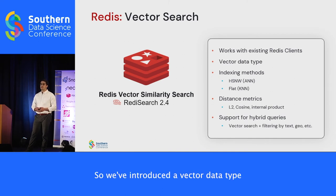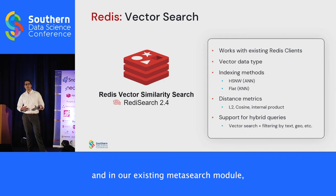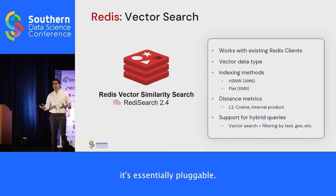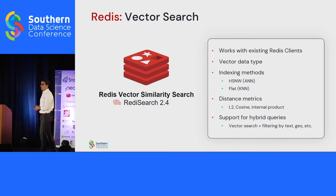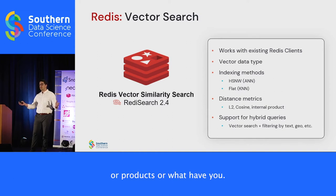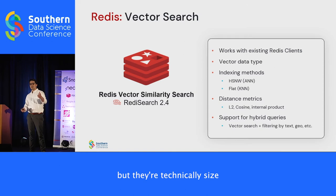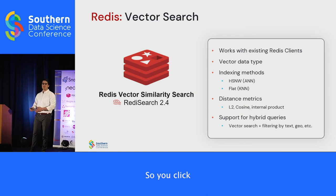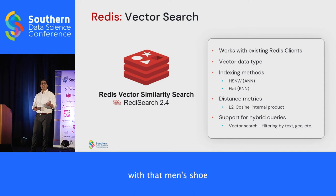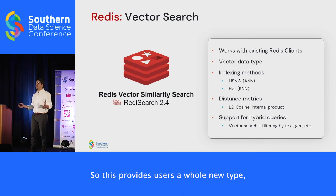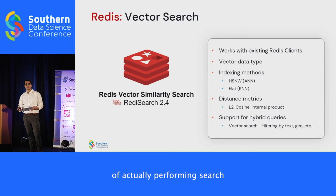Redis now can handle this type of data. We've introduced a vector data type in our existing Redis Search module, which offers pluggable functionality including full-text search, geographic search, and tag-based search — and now vector search. What's cool is you can combine these in hybrid queries: for example, 'I like these shoes but I want size 11 women's' — you filter by the women's gender tag, then do a vector search using the men's shoe image. This provides a whole new way of performing search beyond lexical search or BM25.